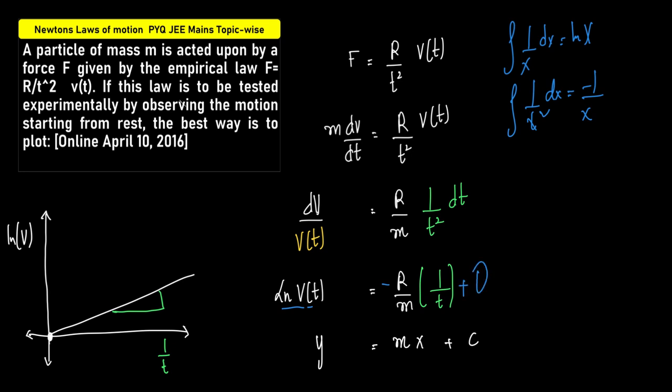So if we draw a graph with the y-axis as ln v(t) and x-axis as 1/t, the slope of this graph will give us -R/m. Therefore, the best way to study this is to plot ln v(t) versus 1/t.